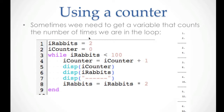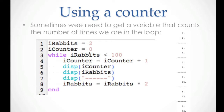Sometimes we need a counter to count the number of times we are in the loop. We use another variable: icounter equals zero. Inside the loop, we write icounter equals icounter plus one. It's very important to add one to the counter, and don't forget to use icounter on both sides of the equal sign. We display the icounter value and irabbits, so the output will be: 1 and 2, then 2 and 4, then 3 and 8, and so on. The counter adds one every time. It begins with zero — don't forget that.